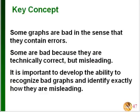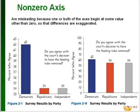Some graphs are bad because they have errors; others are technically correct but misleading. Here's an example: a graph showing what percent agreed with a court decision to remove a feeding tube, broken down by Democrats, Republicans, and Independents. It looks like Democrats agreed much more frequently, but the vertical axis starts at 53, not zero, which makes it misleading. When you change the graph to start at zero, the difference is much less dramatic — only about 54% versus 62% — so it really didn't differ by that much.